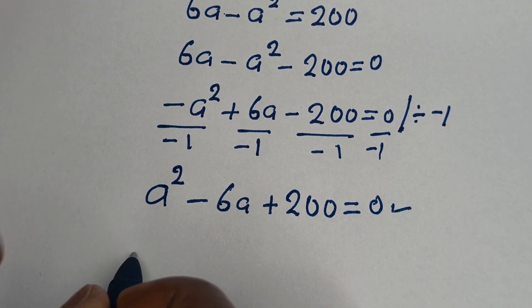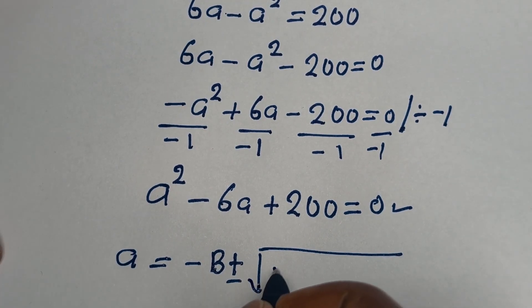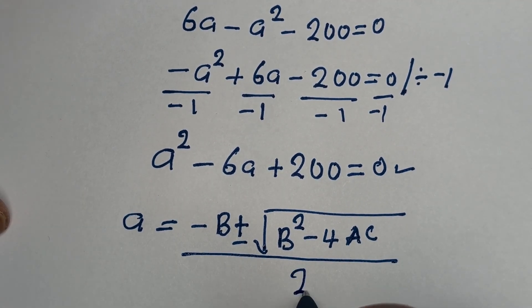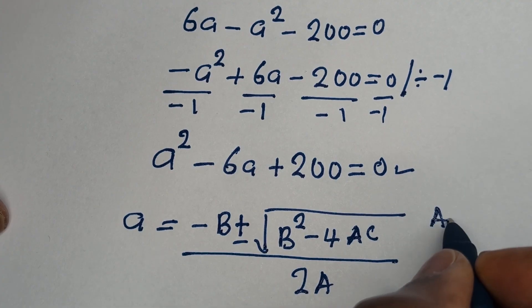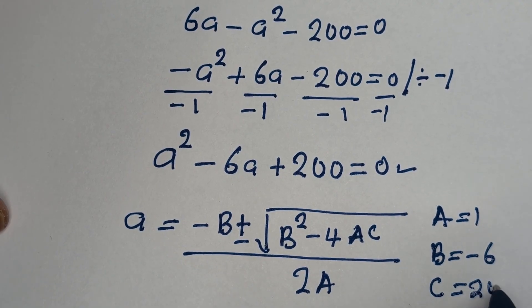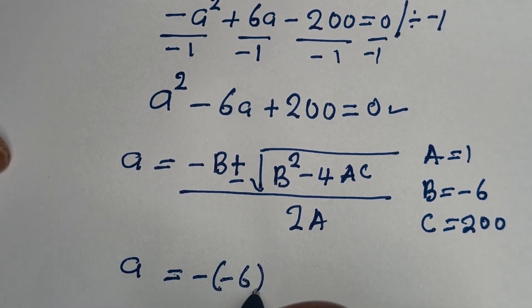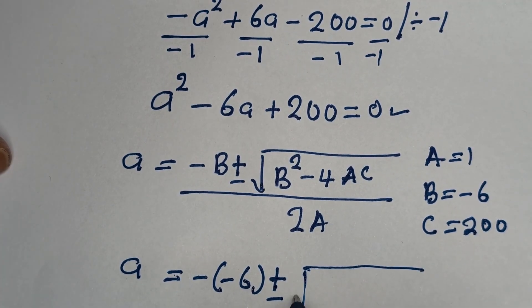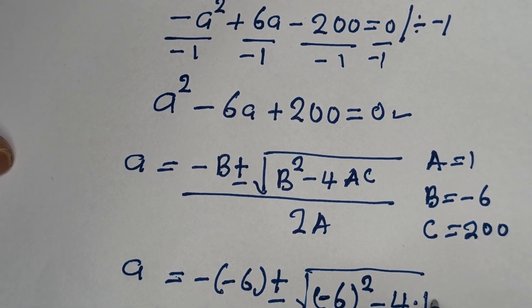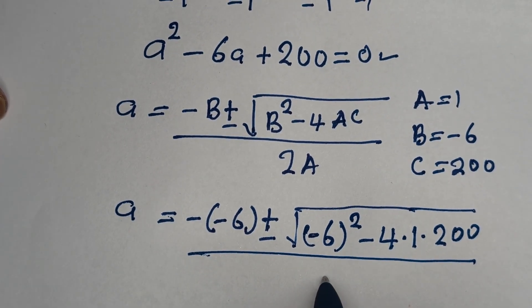So this is a quadratic equation — let us use the quadratic general formula: A equals minus B plus or minus square root of B squared minus 4AC, over 2A. From this equation, A equals 1, B equals minus 6, and C equals 200.